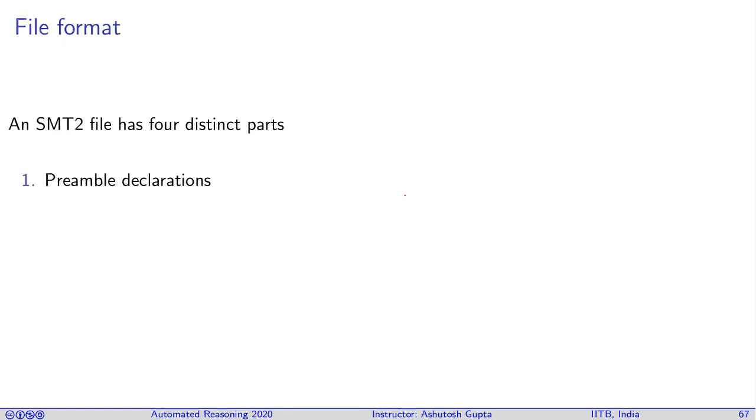If you write an SMT2 file, it has four distinct parts. First, you write a preamble, some sort of declarations. It defines what kind of logic you're using, and there are some parameters of the solving process.